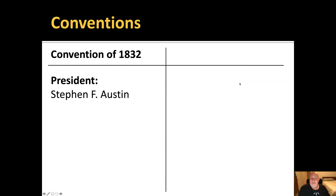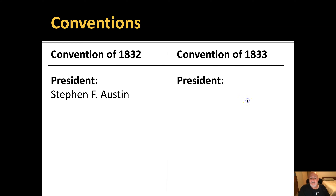Stephen F. Austin was like 'super Texian and super Mexican' — he really loved the idea of taking his settlers into Texas and becoming loyal Mexican citizens. He did everything by the book, learned to speak Spanish, followed Mexican law, and encouraged his settlers to be Catholic. In 1833 they had another convention, and the president of that convention was William Wharton.